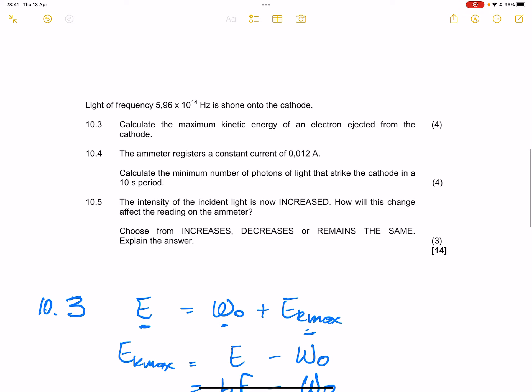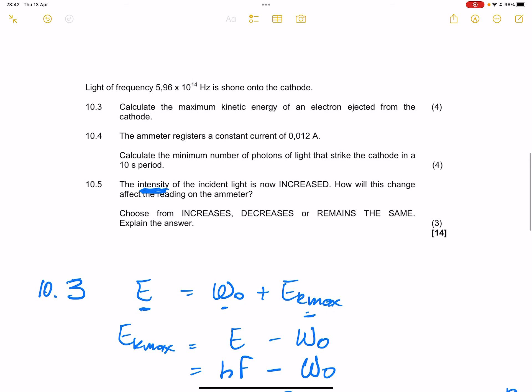So the last question they say to us the intensity of the incident light is now increased. How will this change affect the reading on the emitter? They say will it increase, decrease, or remain the same? And we need to give an explanation. Now please note ladies and gents, once we change the intensity, what simply happens is that it will change the number of electrons that are emitted per second. Remember, doesn't change the kinetic energy, but it will change the number of electrons that are emitted per second. So the current will definitely increase.